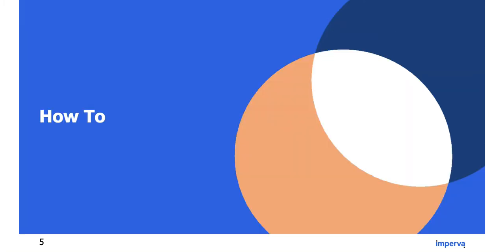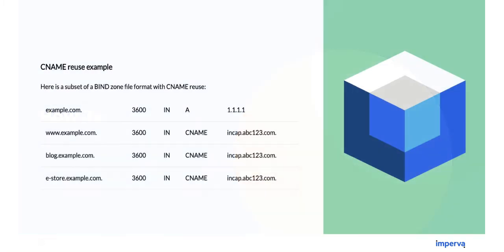So how do we do it? In this example we can see the reuse of incap.abc123.com, which is a CNAME given by Imperva in order to protect blog.example.com and e-store.example.com, and the only thing that needs to be done is DNS configurations.